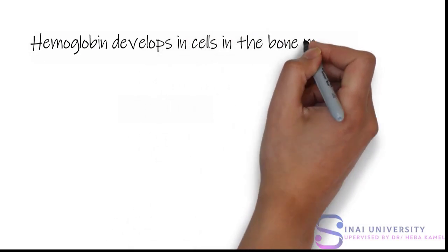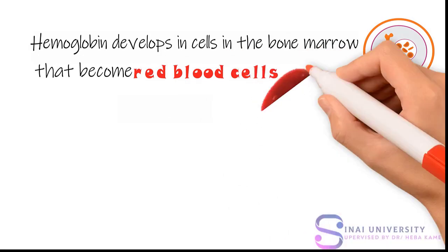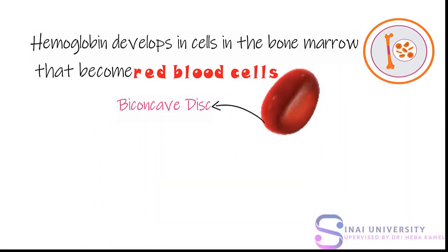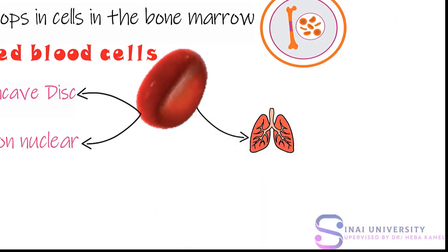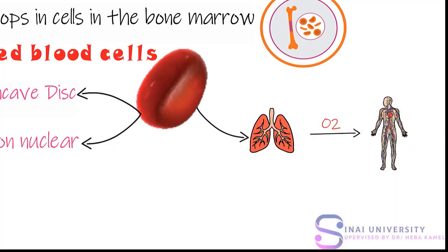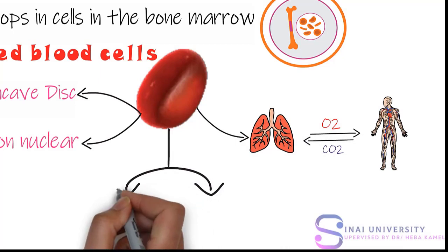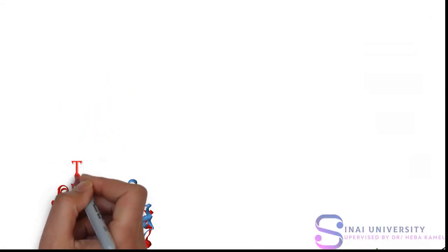Hemoglobin develops in cells in the bone marrow that become red blood cells. The red blood cells have a biconcave disc shape and are non-nuclear to enable them to carry more oxygen. RBCs carry oxygen from lungs to all tissues and carry carbon dioxide from tissues to lungs. When RBCs are normal, they are removed from the body in 120 days. If RBCs are abnormal, they are removed in 10 to 20 days, as in sickle cell anemia.